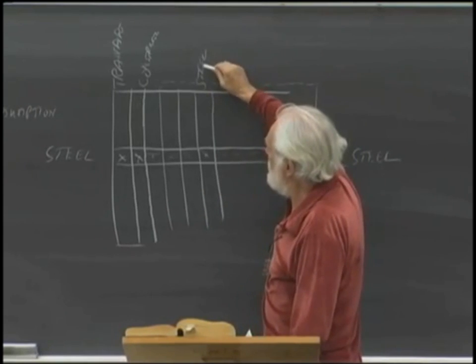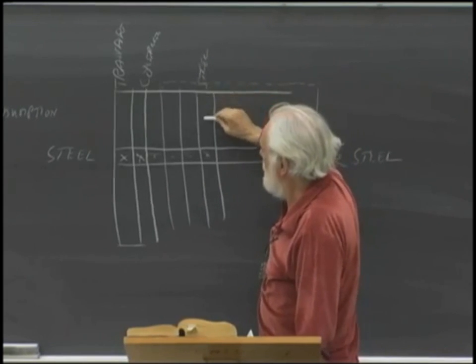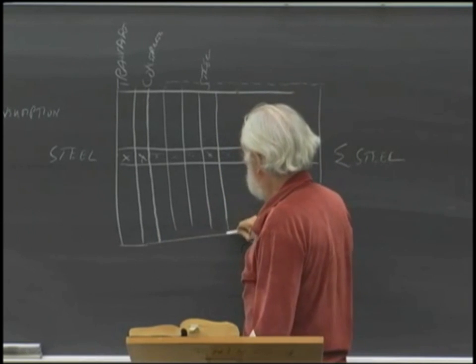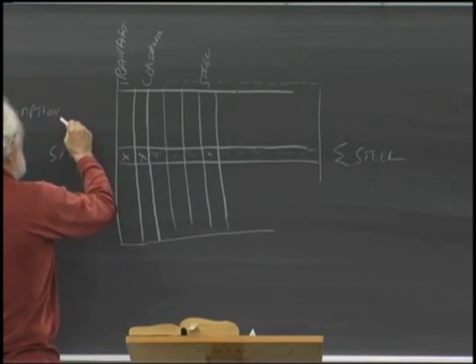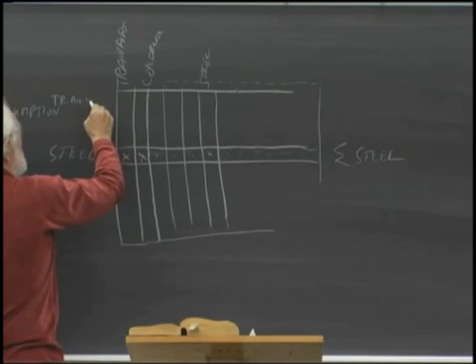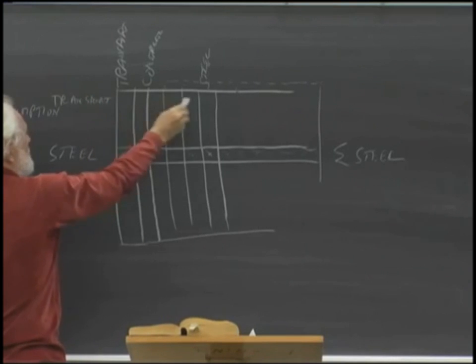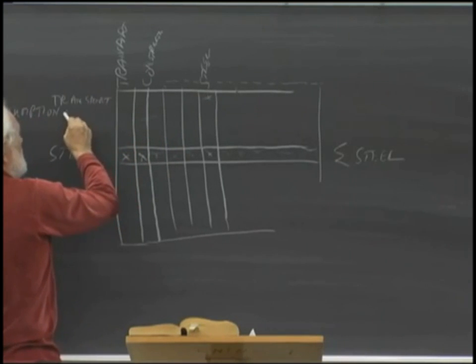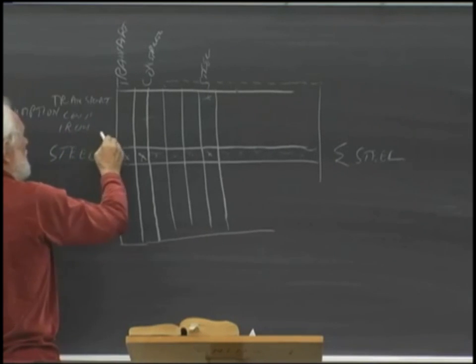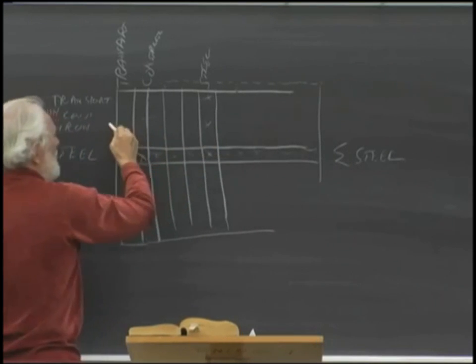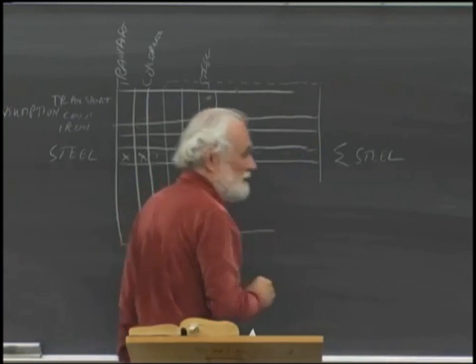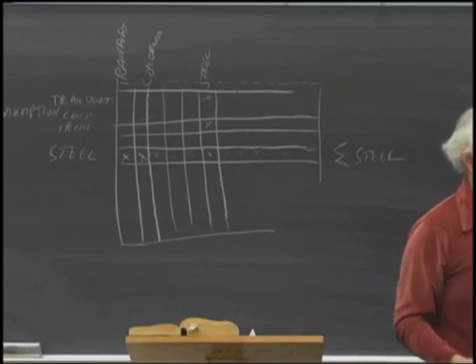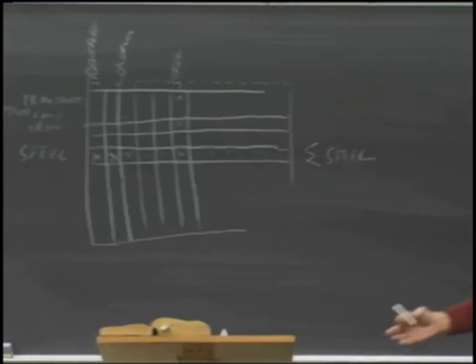But when you take steel here, as you take all of the sectors over here—you'll have transport here—you say, well, how much transport do you need to produce steel? How much construction do you need? How much iron ore do you need? So you end up with a matrix of this kind, right? This is an input-output matrix, and what's very interesting about this: